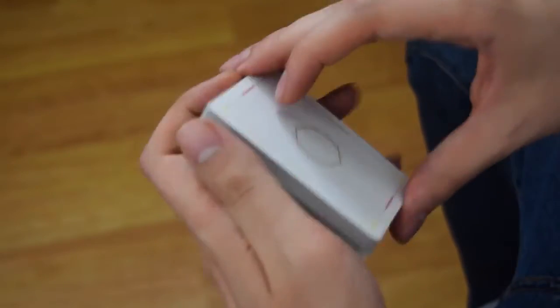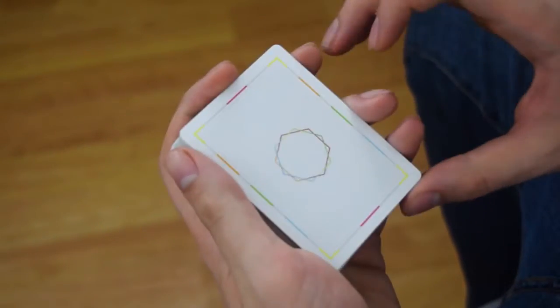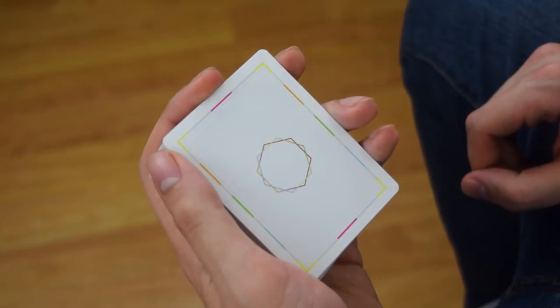In cardistry, every time you break off a packet, you reveal a new back design. This is the premise behind Technique, by using the colored borders as contact points.